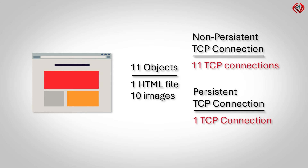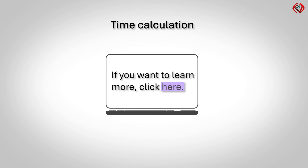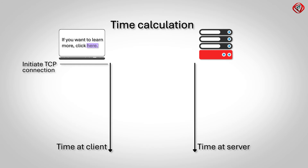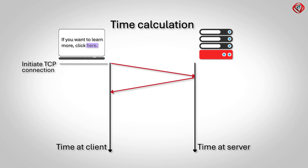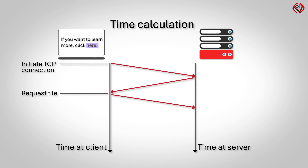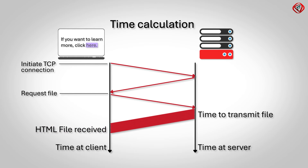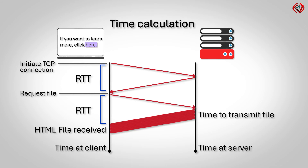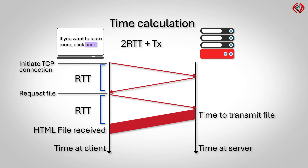Let us calculate the time required for data exchange in persistent and non-persistent TCP connections. Consider the user clicks on a hyperlink, initiating a TCP connection between the web browser and the web server. The web browser sends a small TCP segment to the web server. The web server acknowledges and sends a small TCP segment back. The web browser then sends an acknowledgement along with the HTTP request message. The web server then sends the HTML file. The time taken by a small packet to travel from the client to the server and back to the client is called Round Trip Time or RTT. The total response time to obtain the HTML file is 2 RTT plus transmission time at the web server.